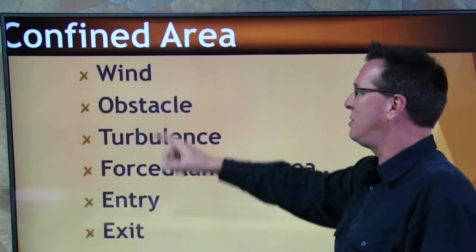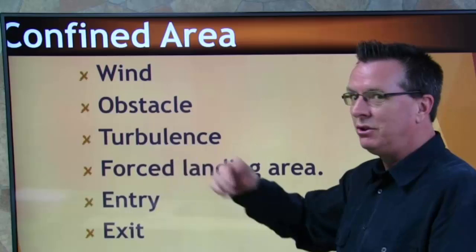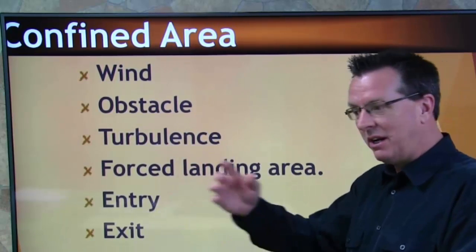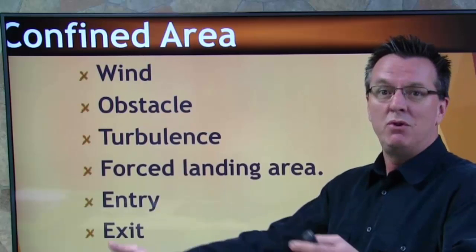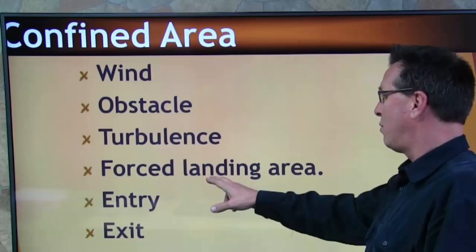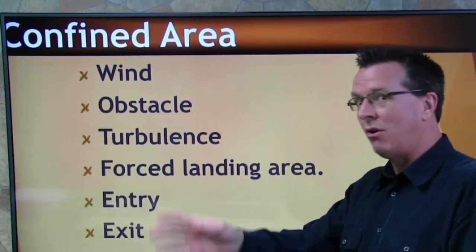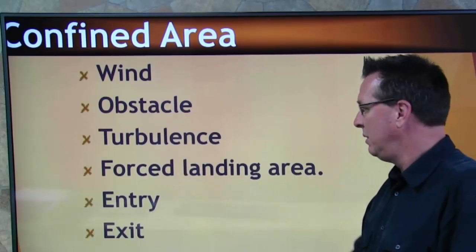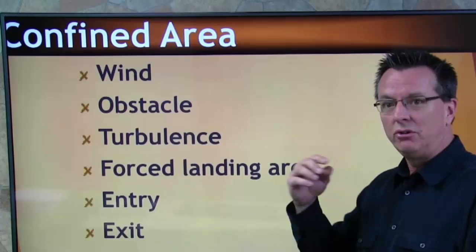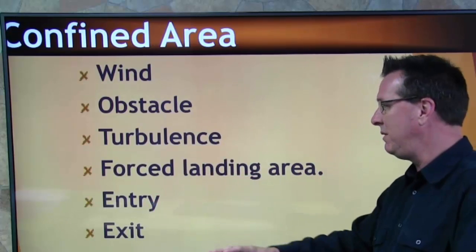Number one, the wind — you have to know where the wind's at and use it to your benefit. Obstacles, you're looking for them around and inside your area. Turbulence — what kind of turbulence are you going to get from the wind moving over the different obstacles and terrain around your landing area? Forced landing area means if you're forced to make a landing on your way in or out, where are you going to go, which ties into entry and exit.